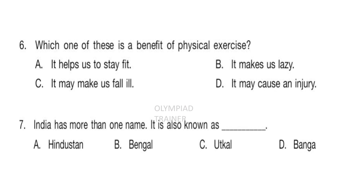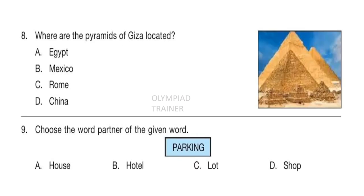Question 7: India has more than one name. It is also known as... Answer is option A — Hindustan. Question 8: Where are the pyramids of Giza located? Answer is option A — Egypt.